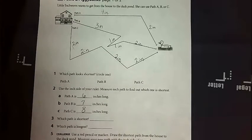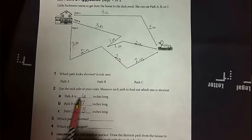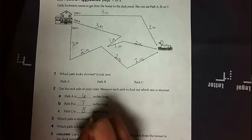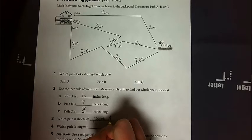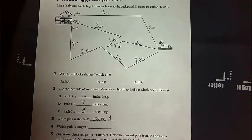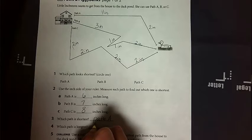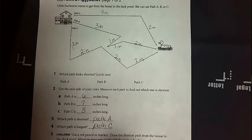All right, so now we can see from actually measuring them and adding up the lengths, which path is the shortest? So I see that path A. I'm going to write path A for number three because it's the shortest, it's the smallest inches. And which path is the longest? So path C, it's the longest because it's eight inches long.